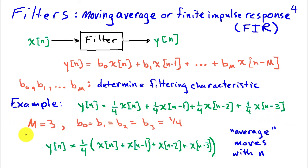In this case, capital M is 3. That's the largest delay associated with the input x of n. We have coefficients b0, b1, b2, b3, and those are all one-fourth. We can factor out the one-fourth and rewrite y of n as the average of the four most recent inputs. At time n, I take the four most recent values of the input - x of n, x of n minus 1, x of n minus 2, and x of n minus 3 - and form the average of those.